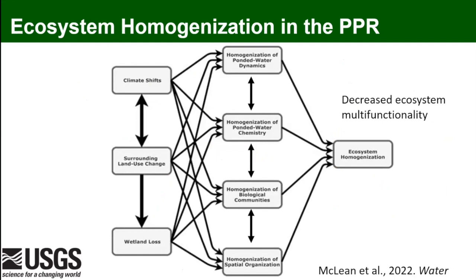The theme of my talk is ecosystem homogenization in the Prairie Pothole Region, with an emphasis on wetlands, but I'll also discuss prairies since they're connected. This is a recent paper from my dissertation with a conceptual model. Climate shifts, surrounding land use change, and historic wetland loss all interact to cause directional changes in ponded water, hydro-variability, water chemistry, biological communities, and spatial organization — together driving what I call ecosystem homogenization. The invasive species component should probably be in the model but is hard to place, as it involves both human-facilitated dispersal and mechanisms that promote invasives.